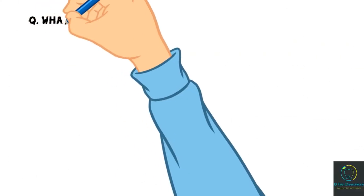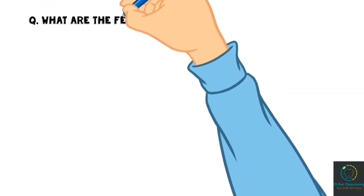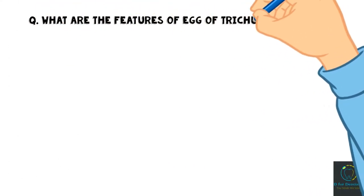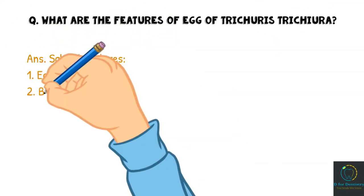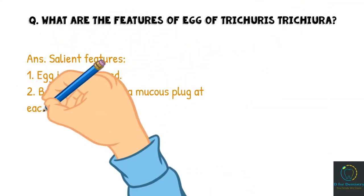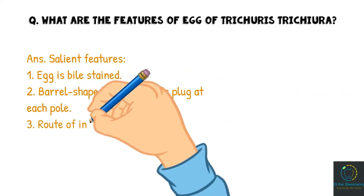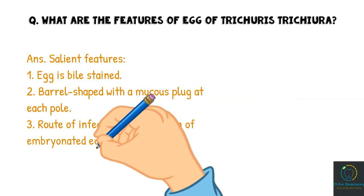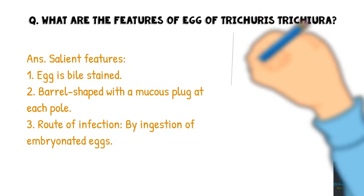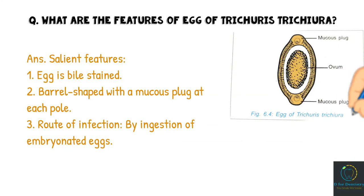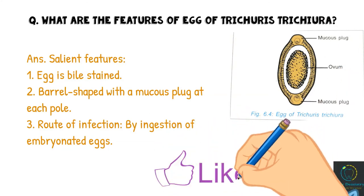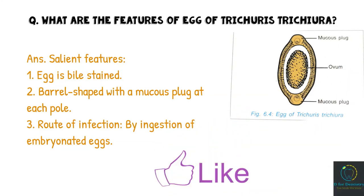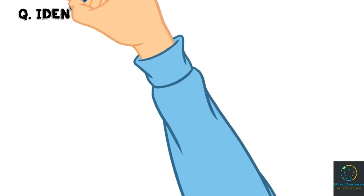What are the features of the egg of Trichuris trichiura? Salient features: The egg is bile-stained, barrel-shaped, with a mucus plug at each pole. Route of infection is by ingestion of embryonated eggs.